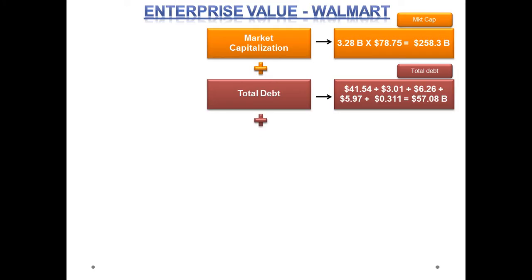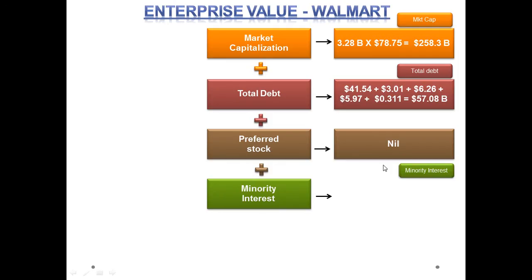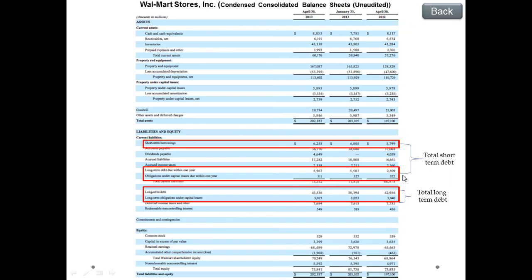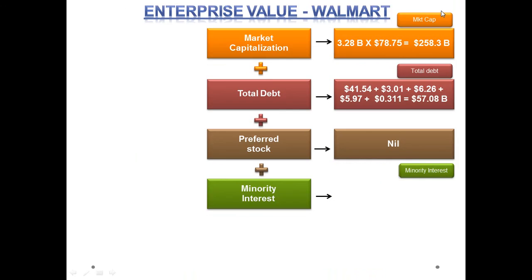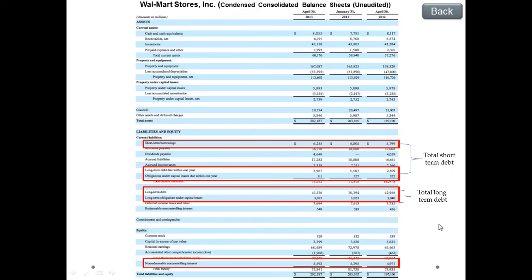Next in line is preferred stock. Walmart does not have preferred stock in its balance sheet. After this, we add minority interest, reported as non-controlling interest in Walmart's balance sheet, which is approximately $5.59 billion. Lastly, we need to deduct cash and cash equivalents reported under current assets, which is $8.86 billion.